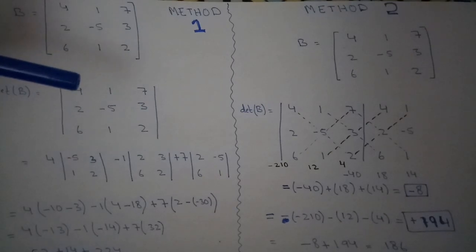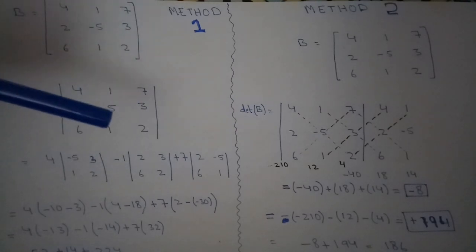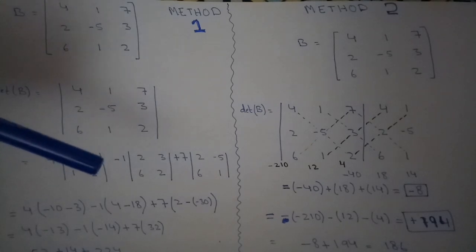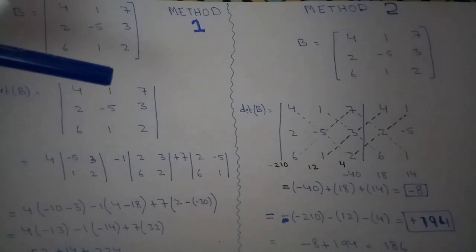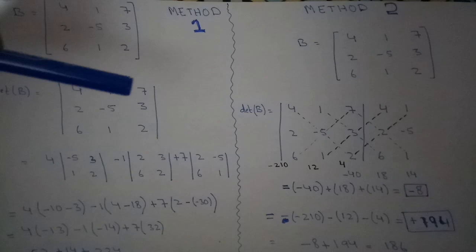First of all we will consider this plus 4. Then we will hide this column and this row. The remaining will be minus 5, 3, 1 and 2. Minus 5, 3, 1 and 2.